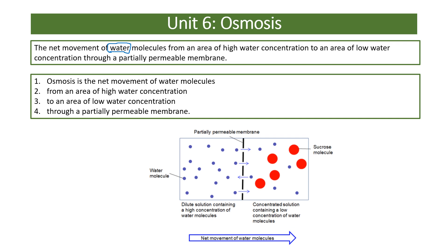A high water concentration means that on this side of the membrane there are predominantly water molecules, whereas a low water concentration means there are fewer water molecules and, more importantly, something dissolved in the water. The highest water concentration you can have is pure water — anything dissolved in it lowers that water concentration.